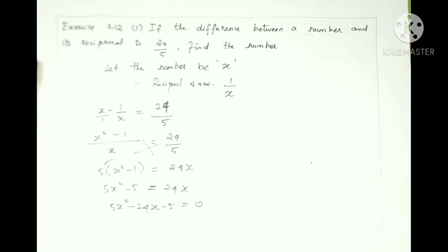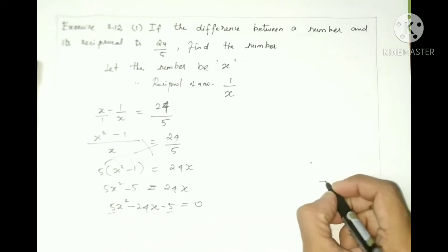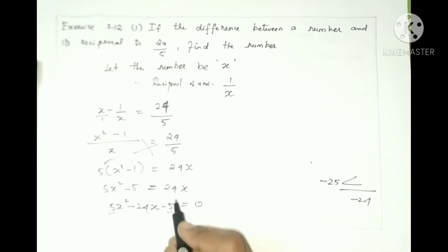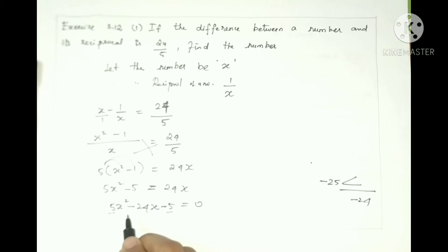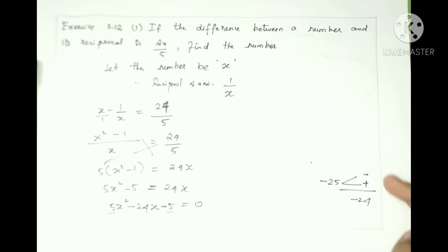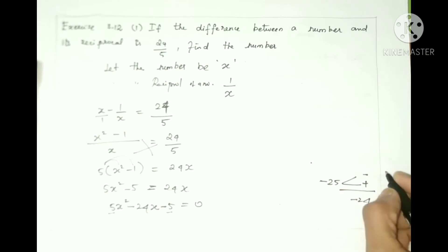Now we have the quadratic equation, so we can solve it by factorization. For factorization, multiply the coefficient of x squared by the constant: 5 into minus 5 equals minus 25. The middle term is minus 24. We need two numbers that multiply to minus 25 and subtract to give minus 24 — those numbers are minus 25 and plus 1.